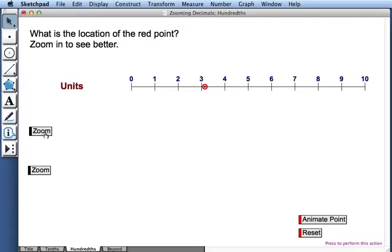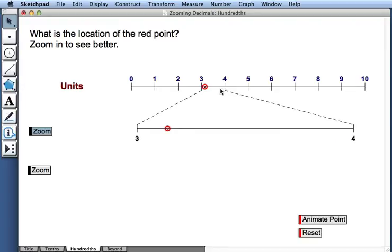Let's check by pressing zoom. The interval of the number line between 3 and 4 expands. And I can see that my estimate of 3 and 2 tenths wasn't bad, but it's actually a little less, as this point represents the same point as on my first number line.